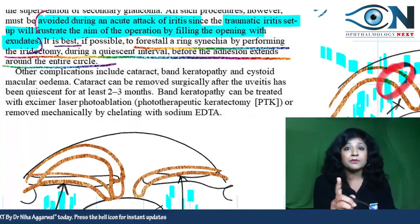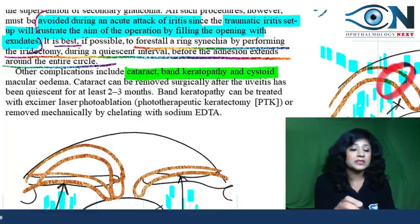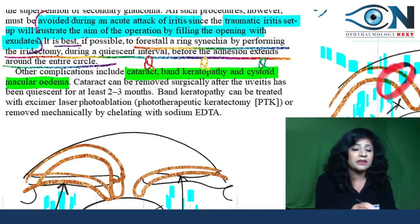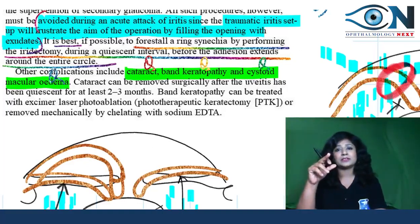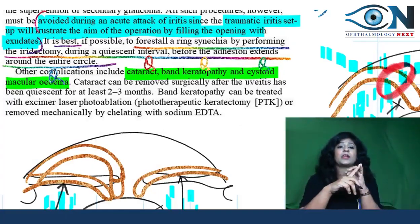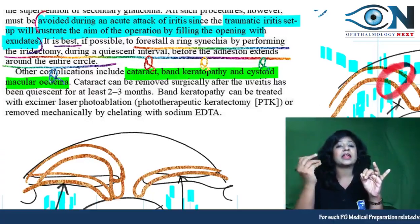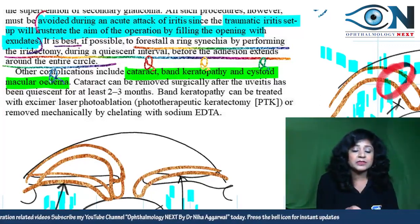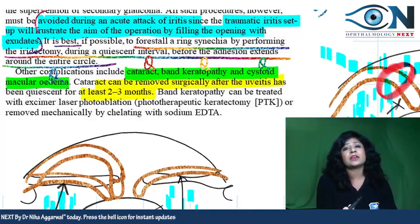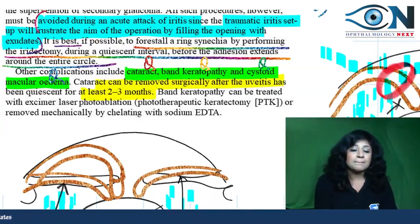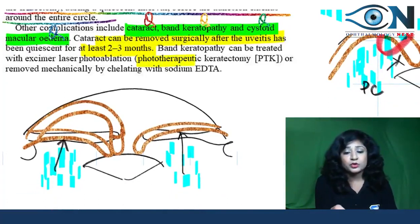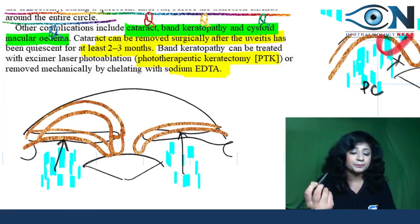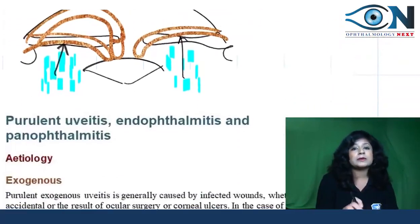Other complications of uveitis include cataract (complicated cataract), band-shaped keratopathy, and cystoid macular edema. The cataract should only be removed after the uveitis has been quiescent for at least two to three months. Band-shaped keratopathy can be treated with PTK (phototherapeutic keratectomy) or chelation therapy with EDTA.